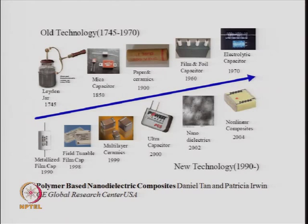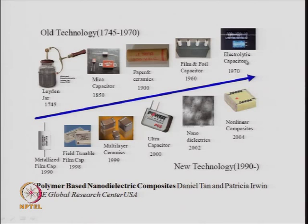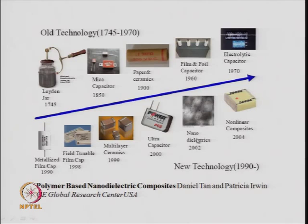Over the years there has been a great change in capacitor technology. From the Leyden jar — the first dielectric device — to mica capacitors popular until the 1900s, then paper-based and ceramic-based capacitors, film and foil capacitors in the 1960s, electrolytic capacitors in the 1970s, metalized film capacitors in the 1990s, field-tunable film caps in 1998, multi-layer ceramics becoming very popular after 1999, and more recently ultra-capacitors and nano dielectrics.